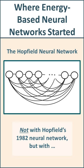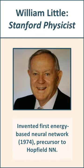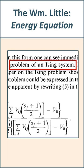Did you know that the very first person who invented an energy-based neural network wasn't John Hopfield, as many think, but was William Little, a Stanford physicist, and he put together a neural network that used the Ising model.